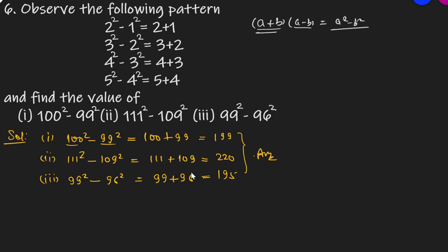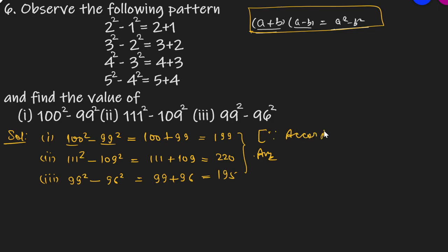तो question जो कहता है उतना ही हमें answer लिखना पड़ता है। हम अपने मन से इस formula का use यहां पर नहीं कर सकते। यदि यह pattern नहीं दिया होता और directly पूछा होता कि 100 square minus 99 square is equal to what, तब आप यह formula लगाकर solve कर लेते। तो यह सब ध्यान देना पड़ता है। यहां लिखना पड़ेगा — according to the above given pattern — क्योंकि हमने ऊपर दिए हुए pattern के हिसाब से किया है। Thank you so much, bye!